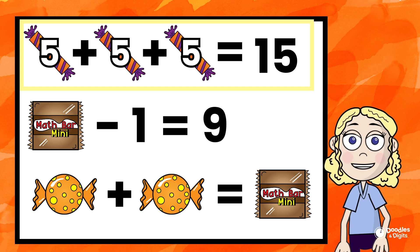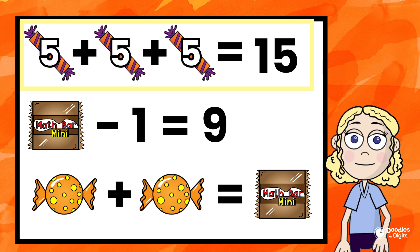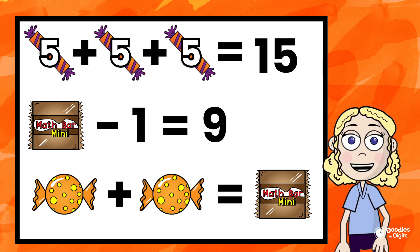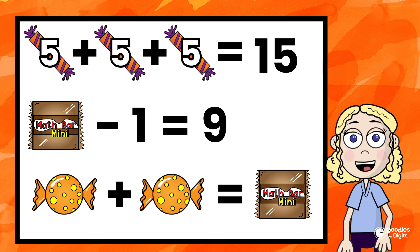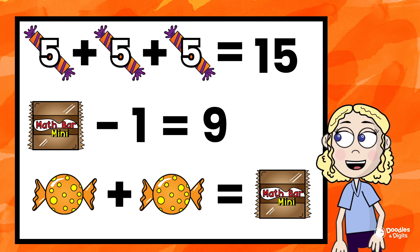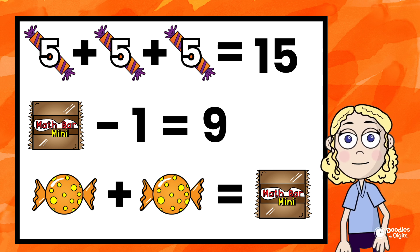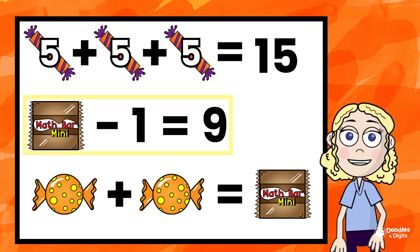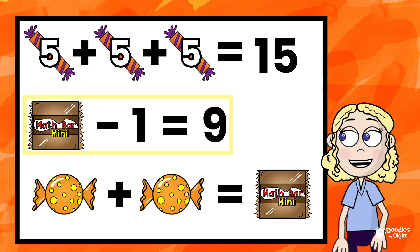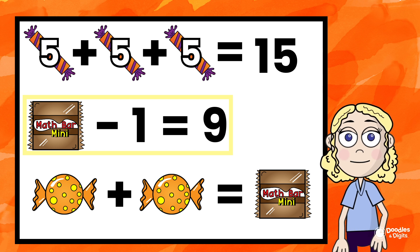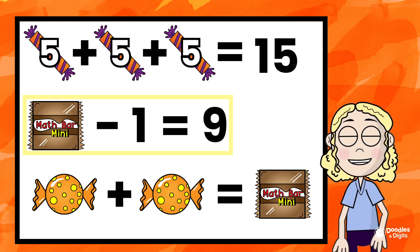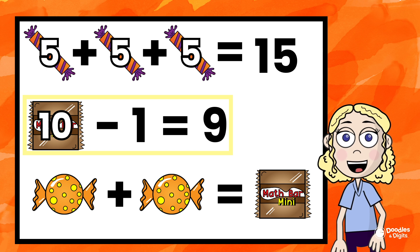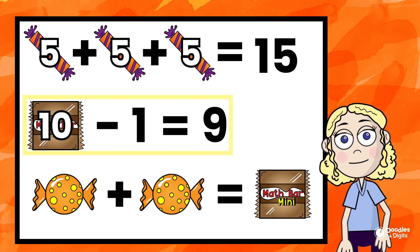5. 5 plus 5 plus 5 equals 15, so this type of candy represents 5. Now I'm going to go on to the next problem. Mini candy bar minus 1 equals 9. Hmm, what minus 1 equals 10? 10. So the mini candy bar represents 10.